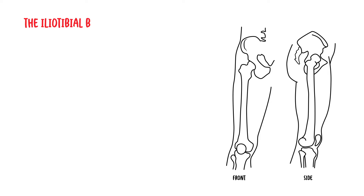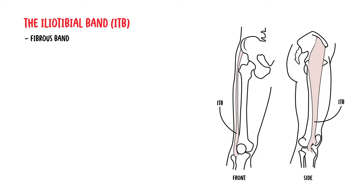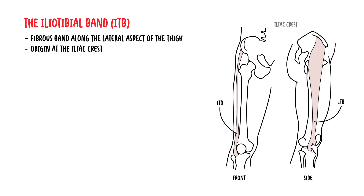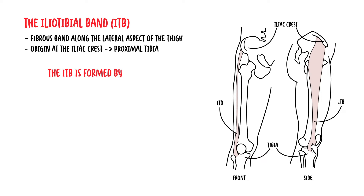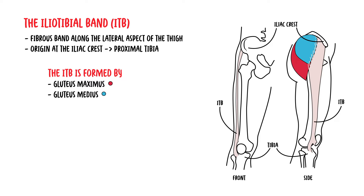The iliotibial band, or ITB, is a fibrous band that runs longitudinally along the lateral aspects of the thigh, from its origin at the iliac crest to the proximal tibia. The ITB is formed proximally at the hip by the fascia of the gluteus maximus, gluteus medius, tensor fasciae latae, and vastus lateralis muscle.